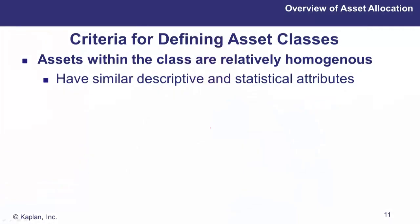What should asset classes have as attributes? Assets within each class should be relatively homogenous — they should be similar to each other, similar in descriptive and statistical attributes. So things like equities: everything under equities will have similar attributes — they represent ownership of companies and may pay dividends.